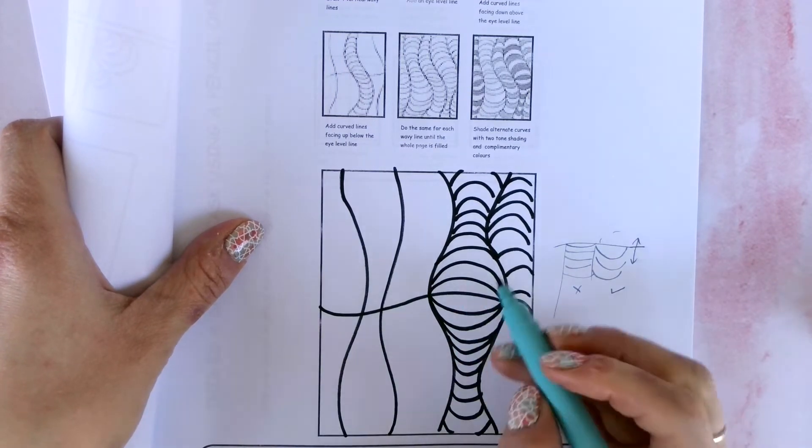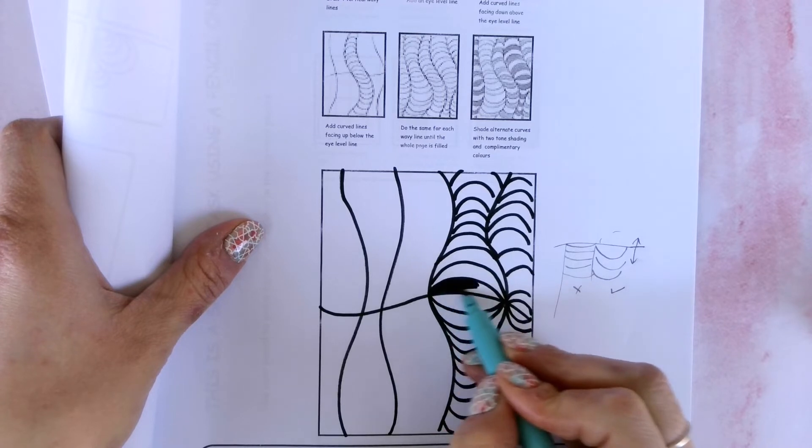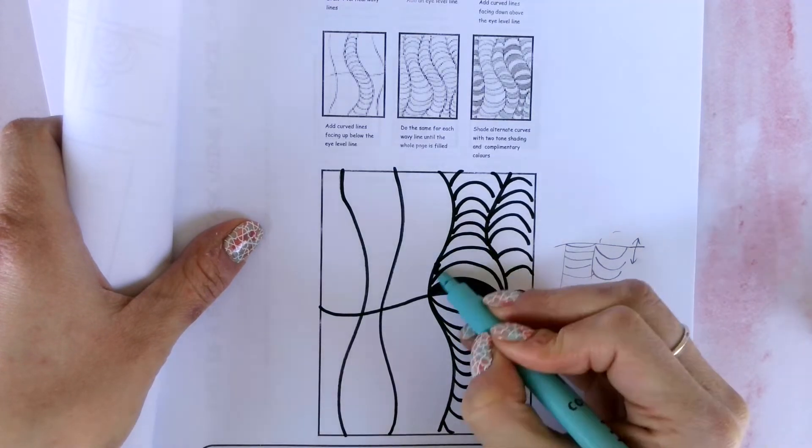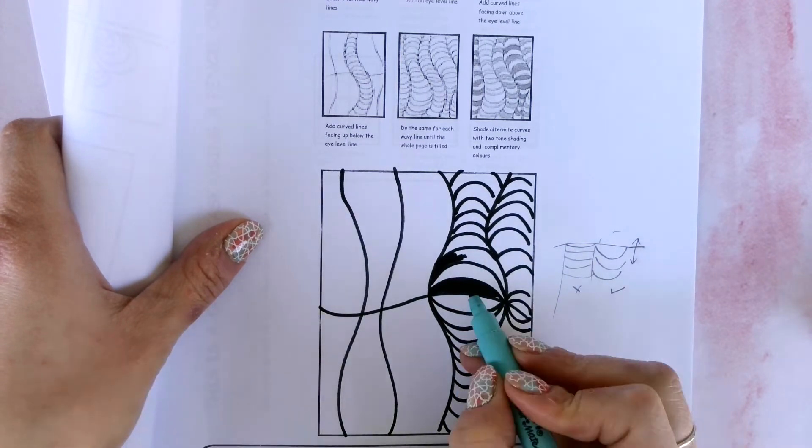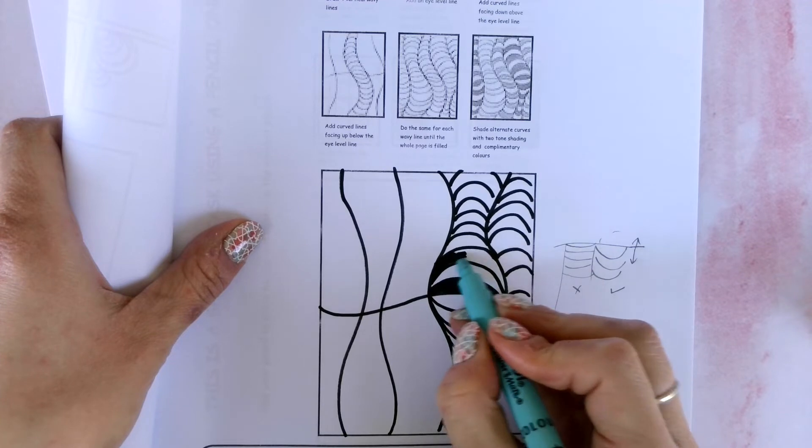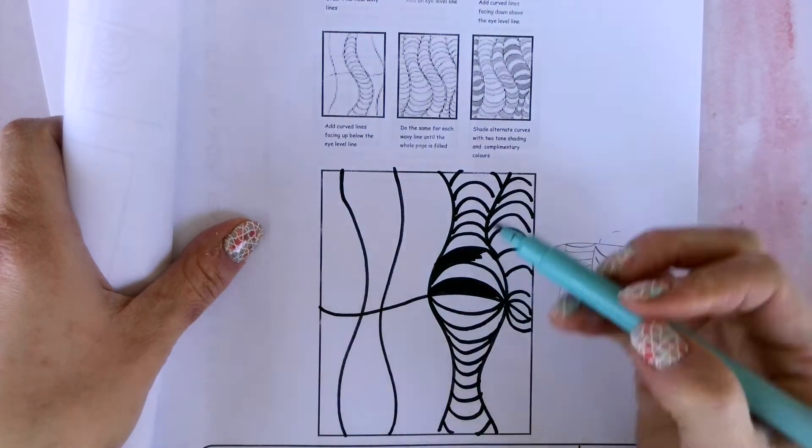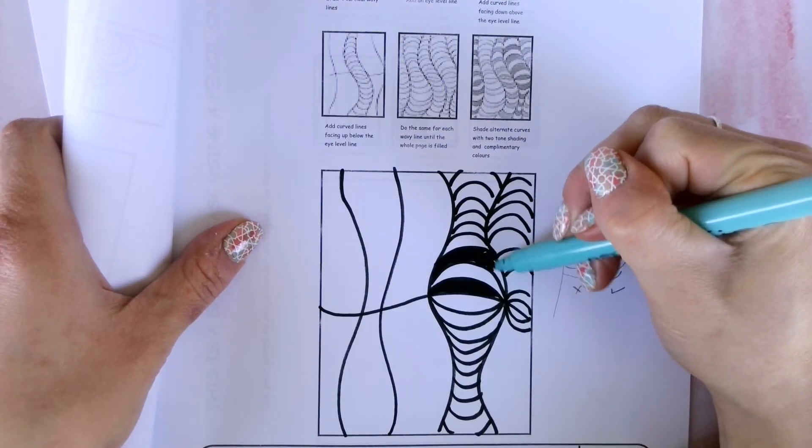When you're coloring in, I want you to go opposite. So do black and white, or if you're using two colors, two complementary colors, make sure you fill in opposites. So that would be green, red, green, red, if you are using complementary colors. And continue over the whole thing using opposites. So try to not get those shades to match.